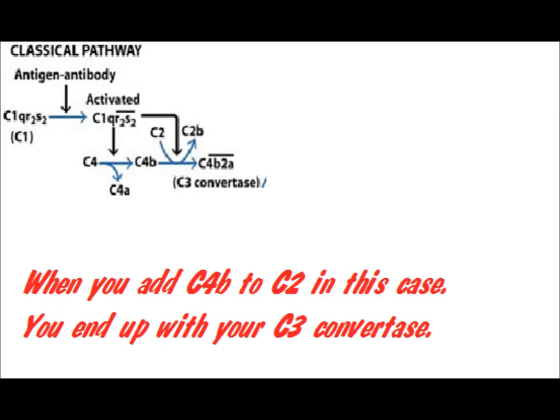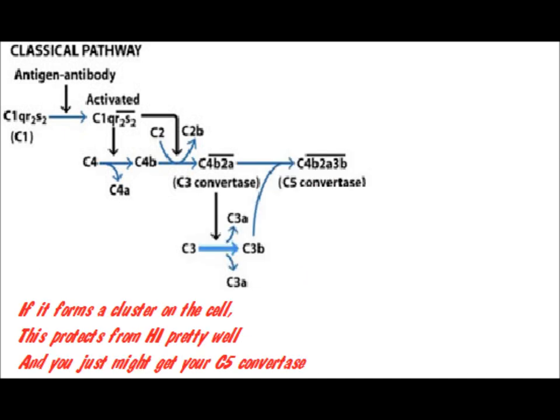When C4b binds to C2 in this case, you end up with your C3 convertase. Oh, it forms a cluster on the cell, cleaved by factors H and I pretty well. And you just might get your C5 convertase.